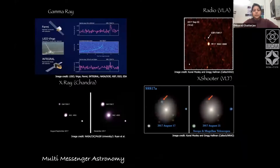Q&A: Are magnetars pulsars as well? Pulsar is a generic name for neutron stars that show pulsations — which can be at radio or other frequencies. Magnetars are neutron stars, and pulsars are a subset of neutron stars which show pulsations. Magnetars may or may not show pulsations, but they are neutron stars that show other features like soft gamma-ray repeater activity or anomalous X-ray pulsar behavior indicating their extreme magnetic fields.